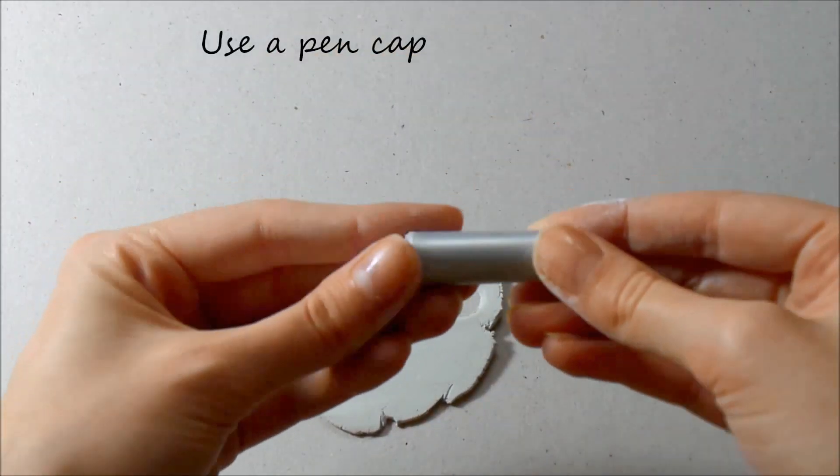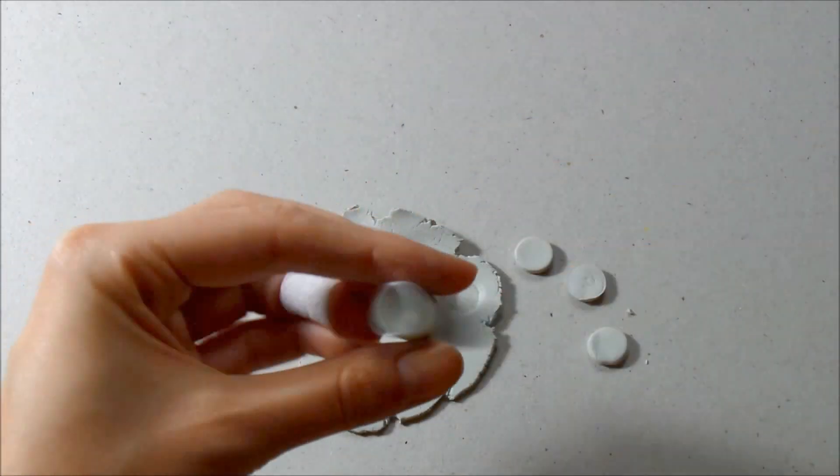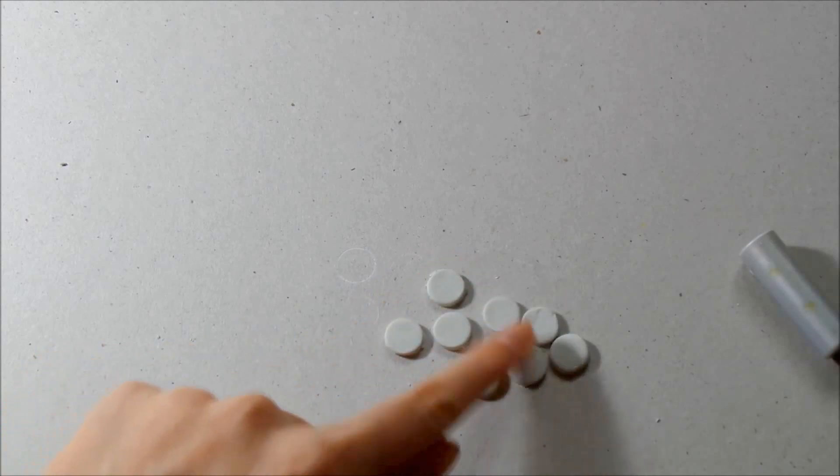Then, use a pen cap or something similar to cut out some small circles. If they get stuck, just use a toothpick and get them out from the cap.